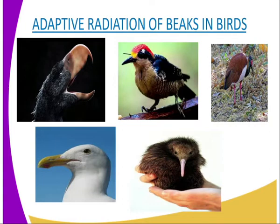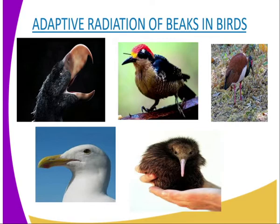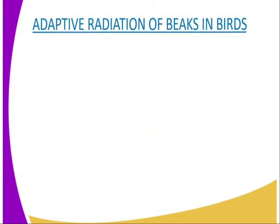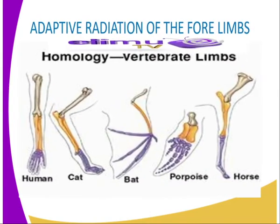This evolutionary phenomenon of divergent evolution is what we call adaptive radiation. An example of adaptive radiation can be observed in homologous structures. What we are seeing on our screen are what we are defining today as homologous structures. Homologous structures are those that have a common embryonic origin but have been modified to perform different functions. The diversity of the vertebrate four limbs is one example of homologous structures.